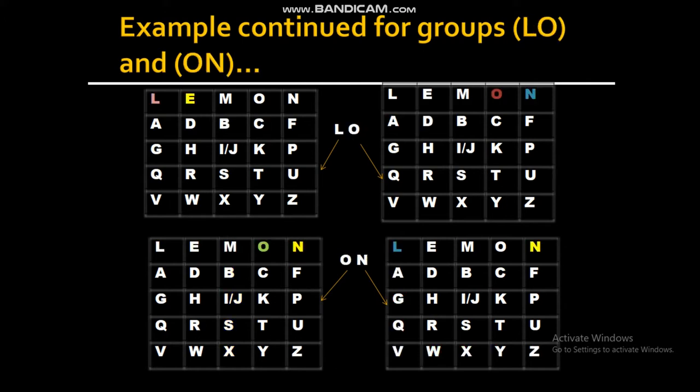Up next is the LO group. L and O occupy the same row, so this is an exceptional case. L will be replaced by the immediate right successor of L, that is E. And O will be replaced by its immediate right successor, which is N. For the ON group, since O and N belong to the same row, O gets encrypted to N and N gets encrypted to L by round-over.